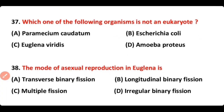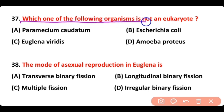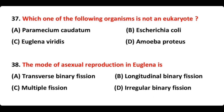Question number 37: Which one of the following organisms is not eukaryotic — Paramecium, Chlamydomonas, or Escherichia coli? Escherichia coli is a prokaryote, so it does not belong to eukaryotes.